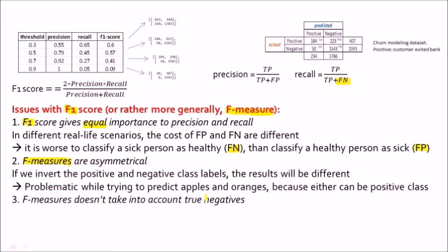The third is that F measures, the family of F measures, do not take into account the true negatives. So if you look at the formula for precision and recall, precision has true positive and false positive and recall has true positive and false negative. So neither of these two take into account the number of true negatives. And since precision and recall they form the building blocks for the F1 score, even F1 score does not take into account the true negatives.